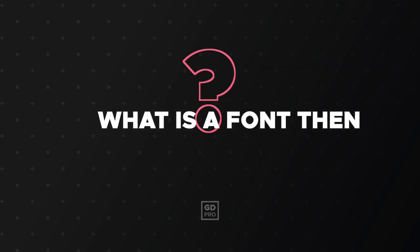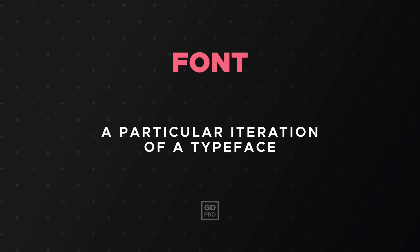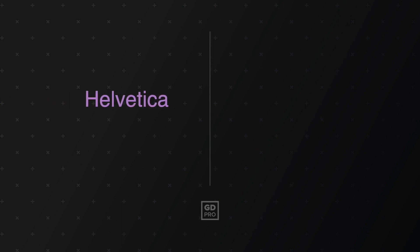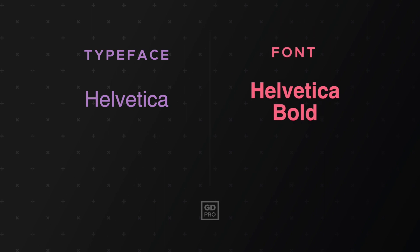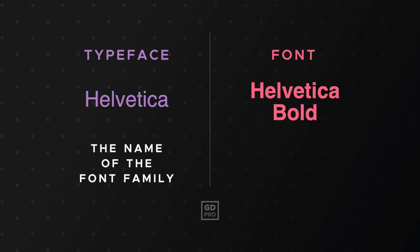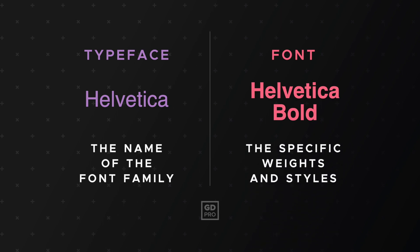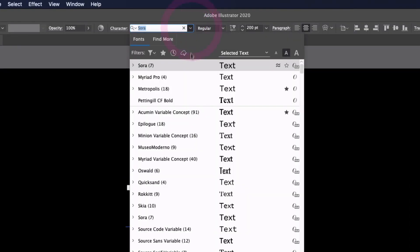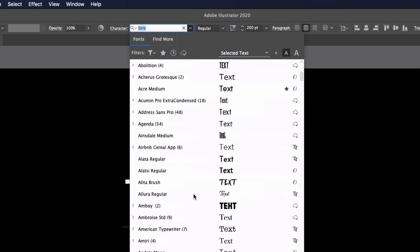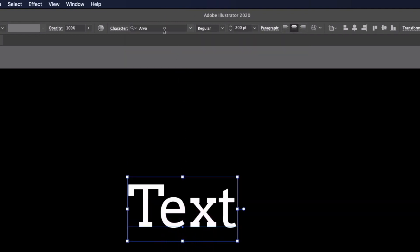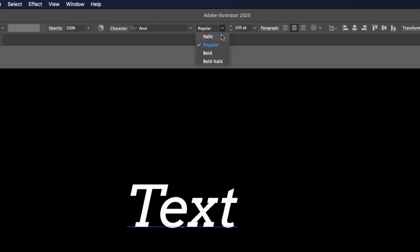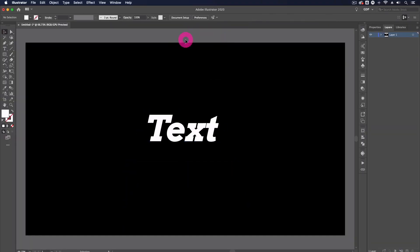So what is a font then? It's a particular iteration of a typeface. Let's look at an example. Helvetica is a typeface — a typeface I'm sure you've all heard of. Now Helvetica Bold is a font. Helvetica is the name of the family of fonts, and the specific weights or styles such as italicised versions are the fonts making up the typeface. Another way to look at this is when you're in a program like Adobe Illustrator — when you go to select a font, you normally have two drop-down menus: one for the typeface and one for the fonts within that typeface.